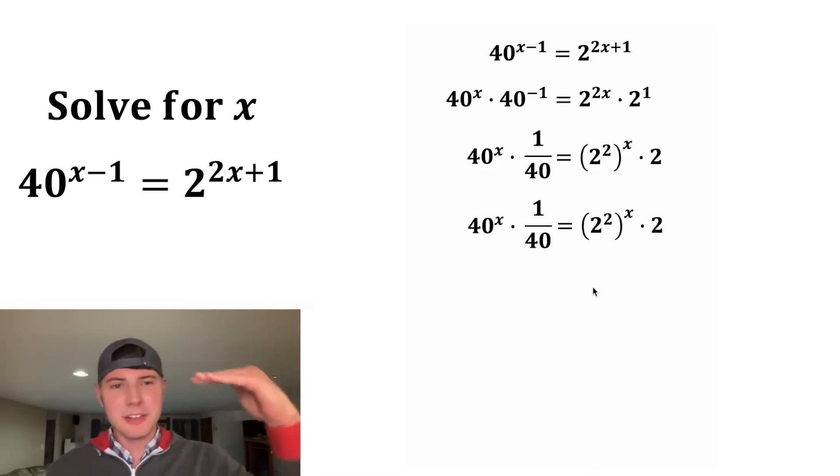Let's copy down the whole row again. I'm trying to leave steps for us to look at. Inside parentheses, this 2 to the second power is equal to 4. So we end up with 4 to the x times 2.